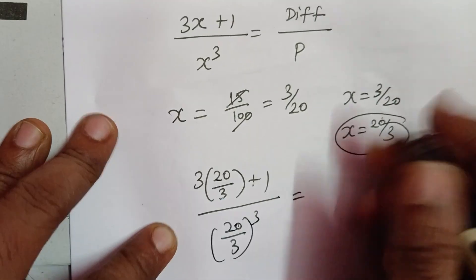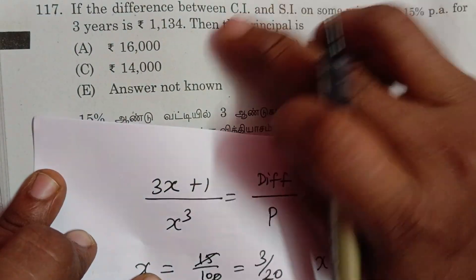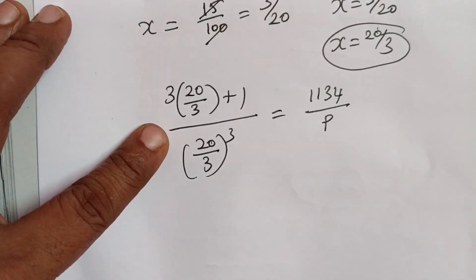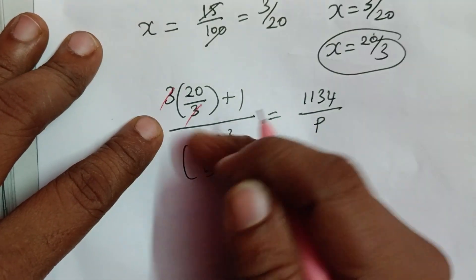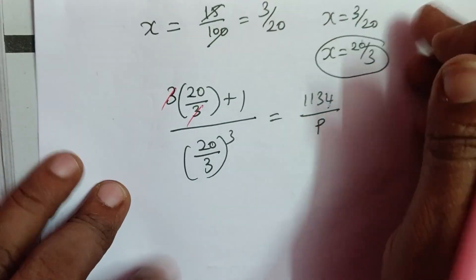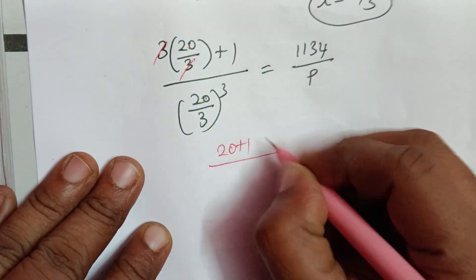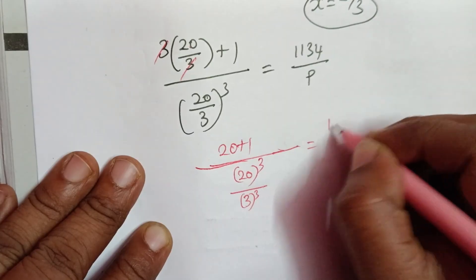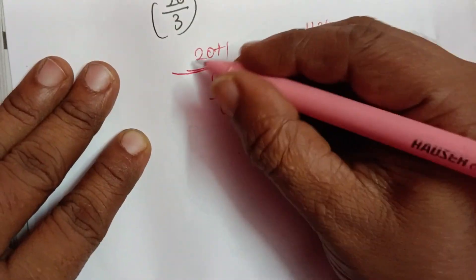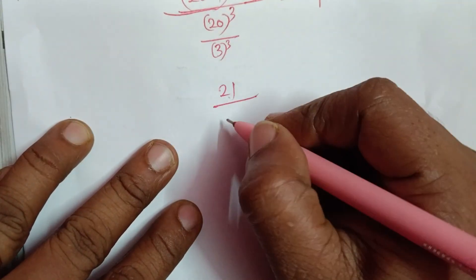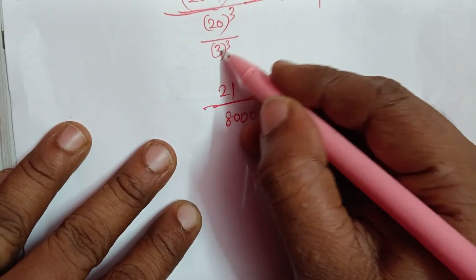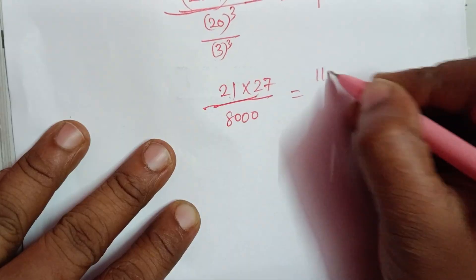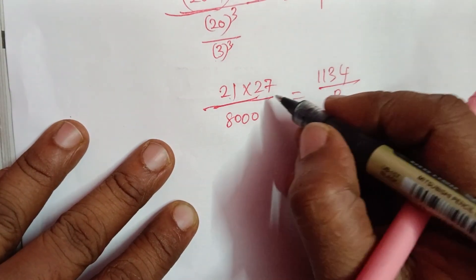The difference amount is 1134. So 1134 equals the result. Now we substitute: 20 plus 1 is 21 in the numerator, and 20 cubed divided by 3 cubed in the denominator, equal to 1134 divided by the principal amount.